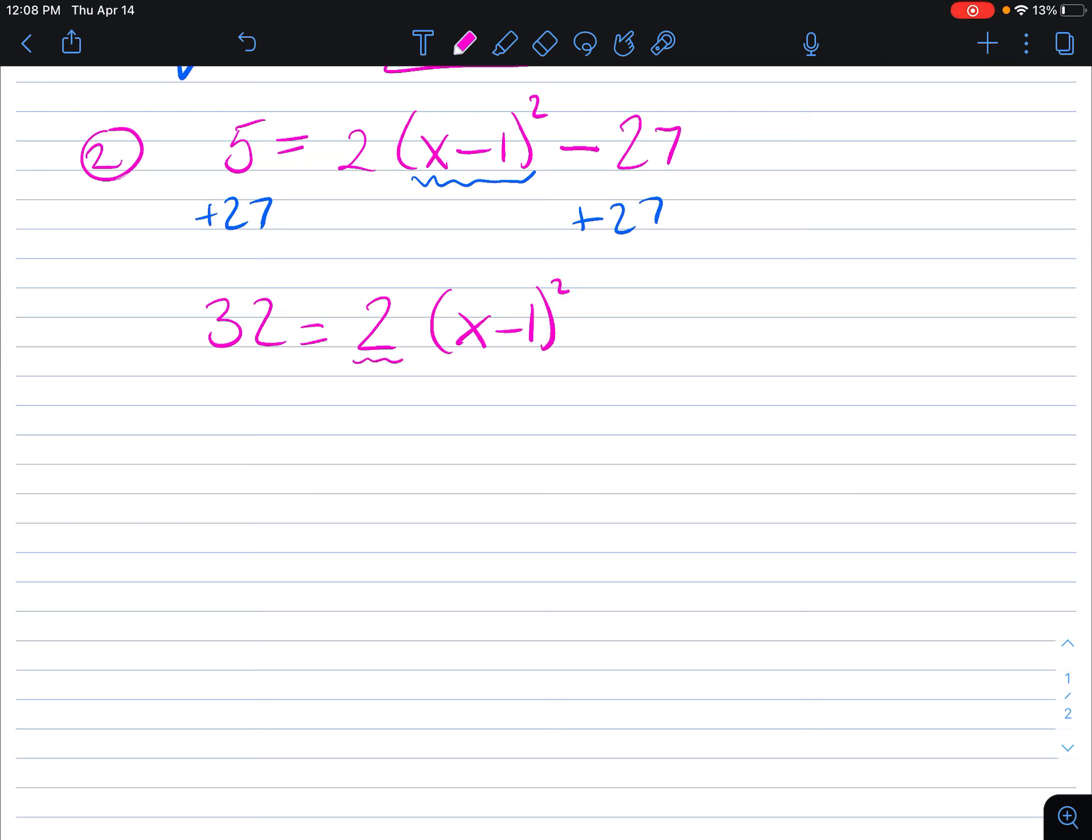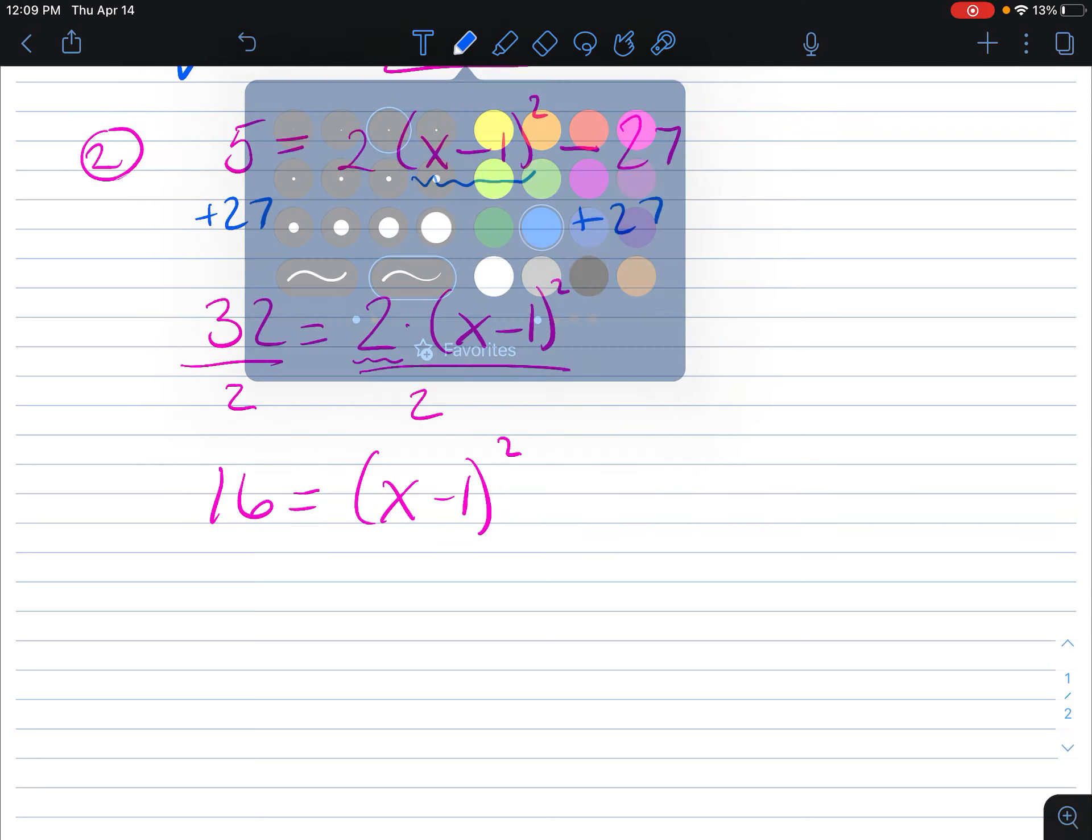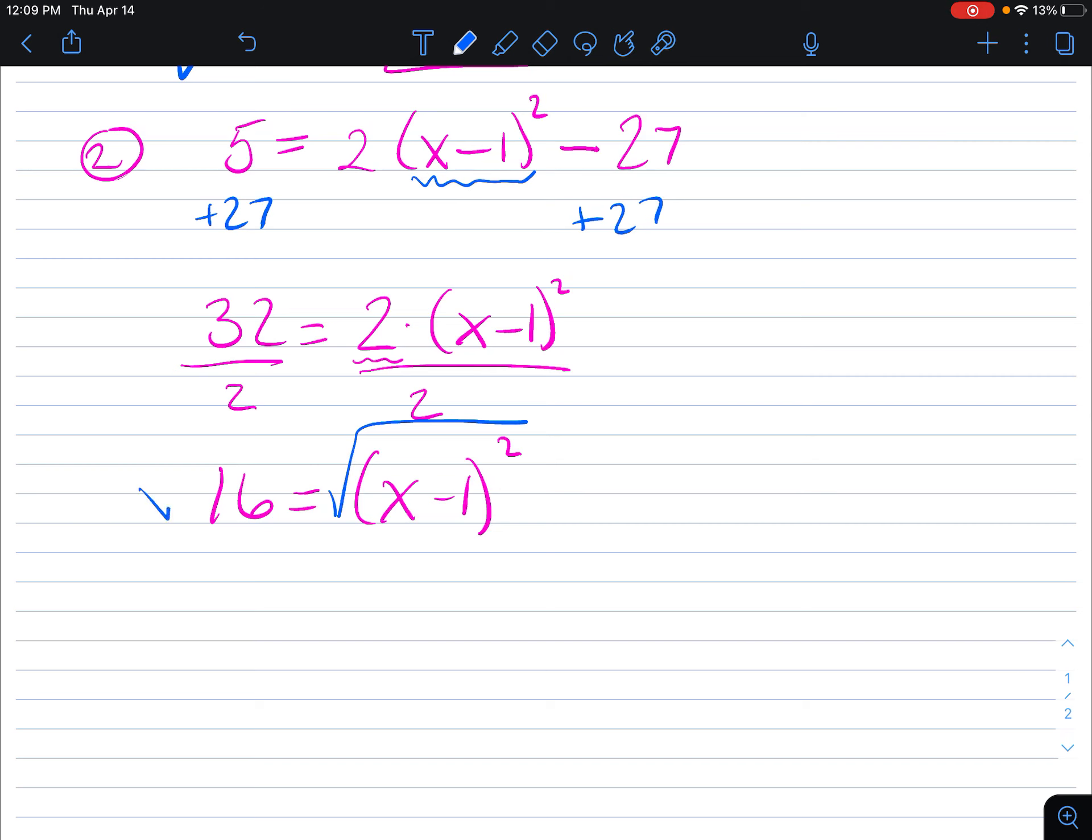Let's get rid of this 2. 2, it's being multiplied, so we divide both sides by 2. 16 equals x minus 1 squared. How do we undo a square? We take the square root, just like we did before.